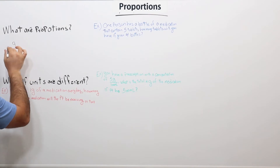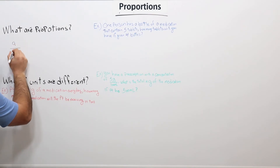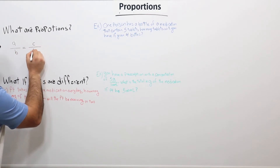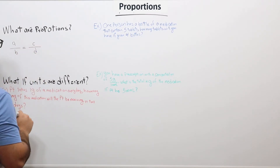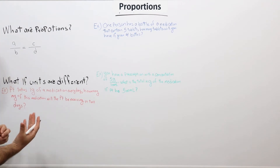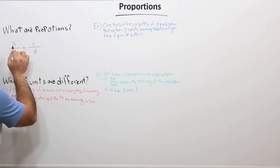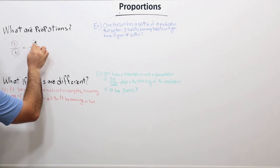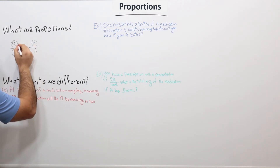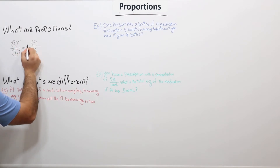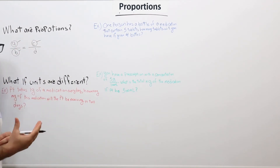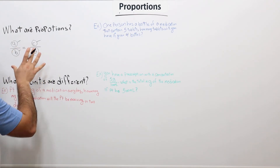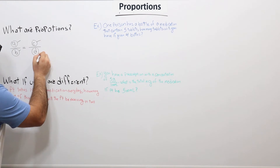So let's say fraction number one has A over B equal C over D. In a question, we are given the values of A, B, and C — these three values are all known. D is the unknown, and the point of the proportion is to find out what D is.